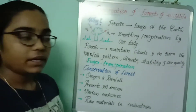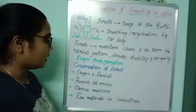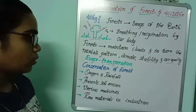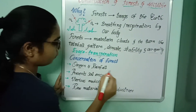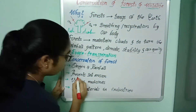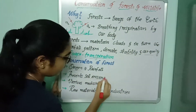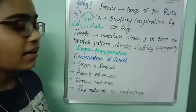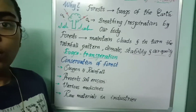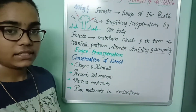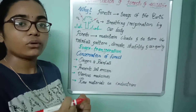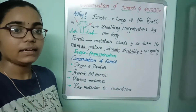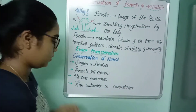Now, why should we conserve forests? What are the uses of forests? First, oxygen and rainfall — this we discussed above. Now, forests prevent soil erosion. Generally, trees have long roots that extend a long distance. Those roots help the soil to hold tightly and prevent soil erosion.